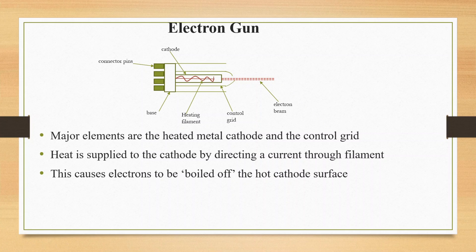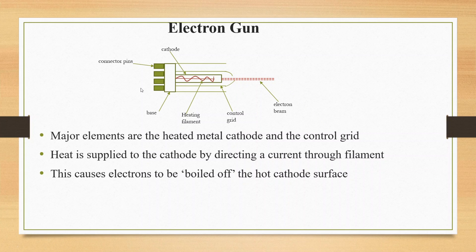The electron beam passes through a small opening. The control grid controls the intensity of the electron beam.